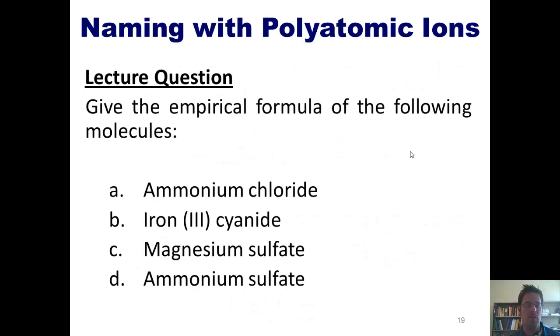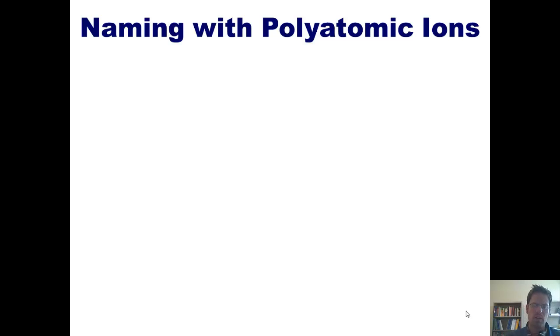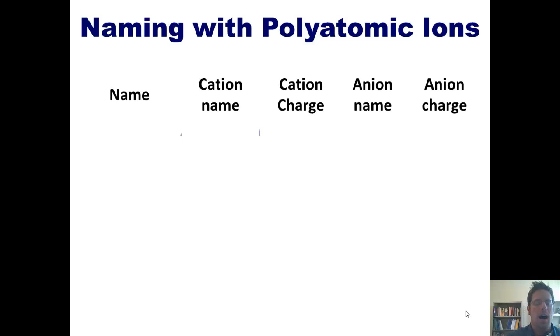Let's take a look at this example. Give the empirical formula of the following molecules. I have four examples you can look at: ammonium chloride, iron-3-cyanide, magnesium sulfate, and ammonium sulfate. I will address a couple of them right now. Let's start with the first one, ammonium chloride. To do this one, I'd like to begin by making a small table like the one shown here. I now write down the target name for which I'm trying to devise my formula. In this case, ammonium chloride.